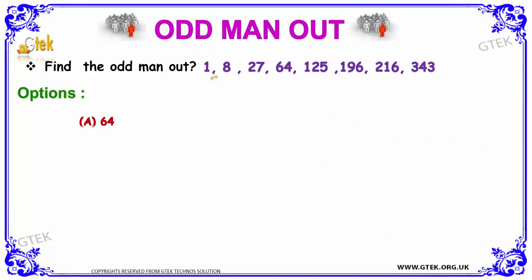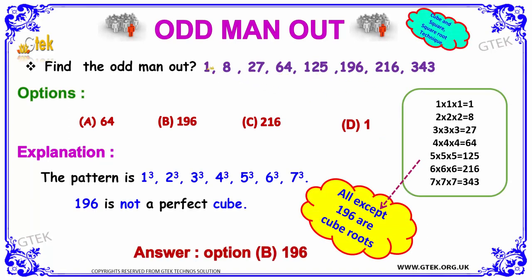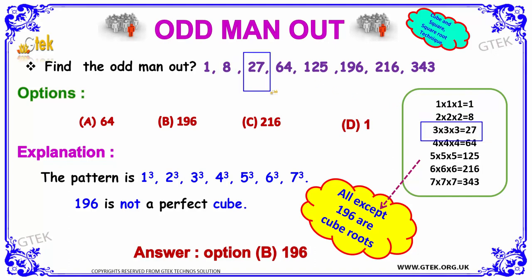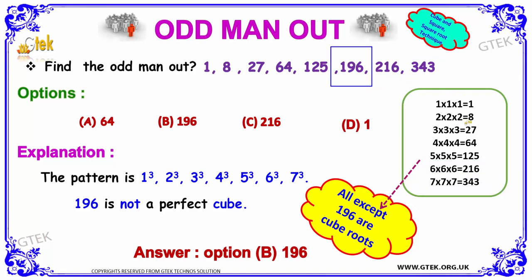For the series 1, 8, 27, 64, 125: 1 cube is 1, 2 cube is 8, 3 cube is 27, 4 cube is 64, 5 cube is 125, 6 cube is 216, and 7 cube is 343. So 196 is not a perfect cube, and the odd man is 196.